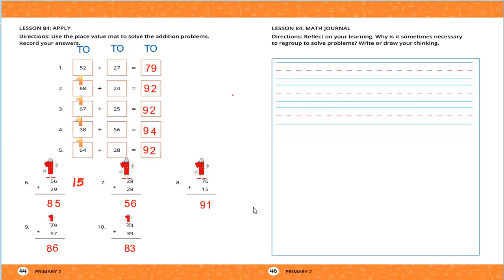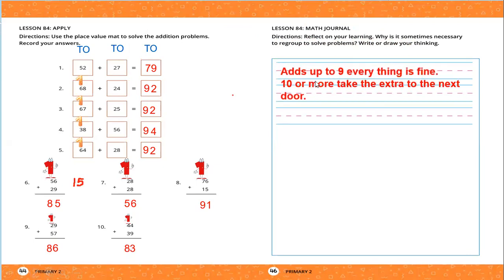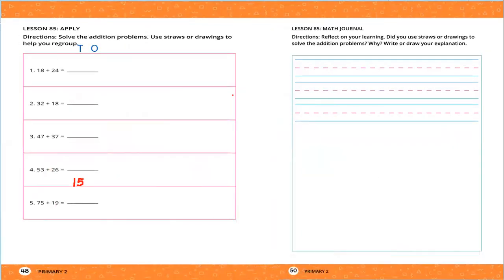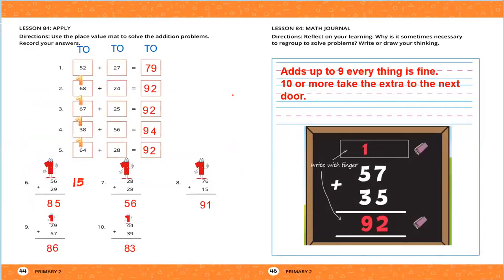Lesson 84, the math journal part — reflect on your learning: why is it sometimes necessary to regroup to solve problems? Addition with regrouping: if we are adding up to 9, everything is fine. But if it is 10 or more, we take the extra to the next place — which is the carry. For example, 57 plus 35: we add 7 plus 5, which equals 12. Since it's greater than 9, I write only 2 and carry up 1. Then 1 plus 5 equals 6, and 6 plus 3 equals 9.